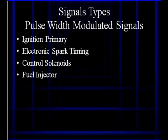Pulse width modulated signals are on for varying lengths of time, like ignition primary, turning current flow on and off. Electronic spark timing signals, solenoid controls, fuel injectors, just to name a few.